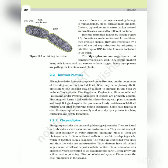All single-celled eukaryotes are placed under Protista, but the boundaries of this kingdom are not well-defined. What may be a photosynthetic protist to one biologist may be a plant to another. In this book we include chrysophytes, dinoflagellates, euglenoids, slime molds and protozoans under Protista. Members of Protista are primarily aquatic. This kingdom forms a link with the others dealing with plants, animals and fungi. Being eukaryotes, the protist cell body contains a well-defined nucleus and other membrane-bound organelles. Some have flagella or cilia. Protists reproduce asexually and sexually by a process involving cell fusion and zygote formation.